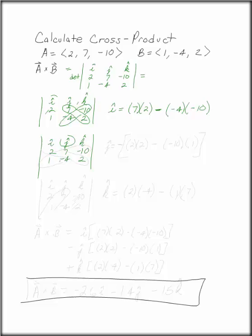So J is going to be 2, 2, and minus negative 10, 1. Negative 10 times 1. The thing you have to remember is that the J part has an extra negative in it.